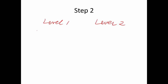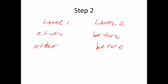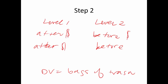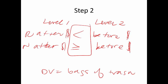Step two: label level one and level two. I put after first, then before — you can do it either way. The DV is bags of trash, before and after a price increase. My research hypothesis: I expect the number of trash bags to go down, so this is a less-than test. The null hypothesis is that trash bags went up or stayed the same after the price increase. Using p less than 0.05 for a one-tailed less-than test.